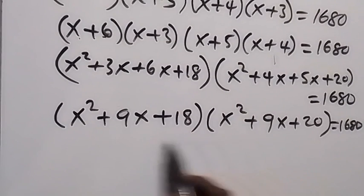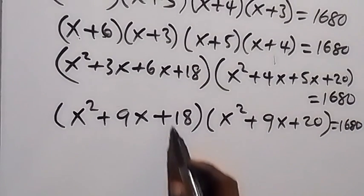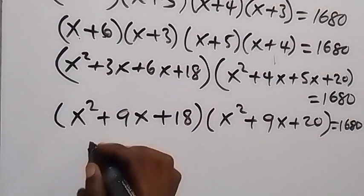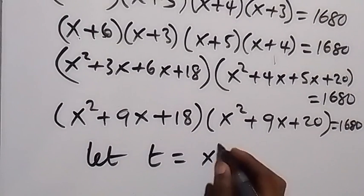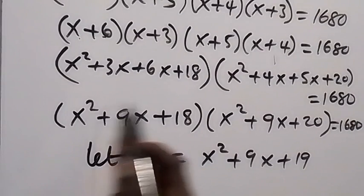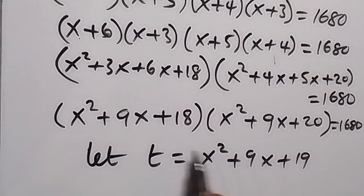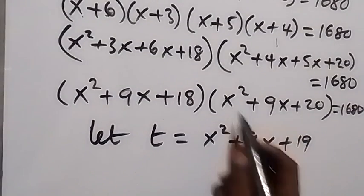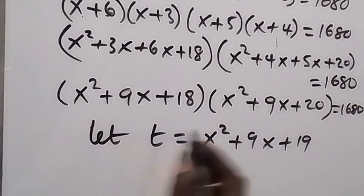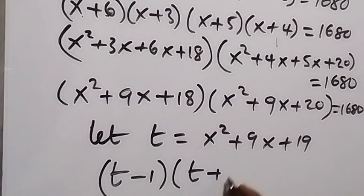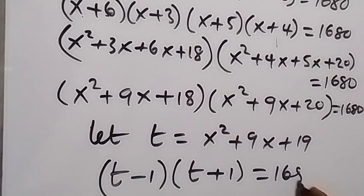We notice these two brackets are nearly the same, differing only by 18 and 20. The number in between is 19. So let t = x²+9x+19, such that the first bracket is t−1 and the second bracket is t+1. We can express this as (t−1)(t+1) = 1680.